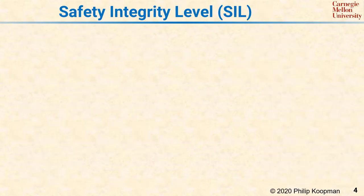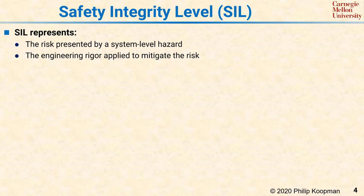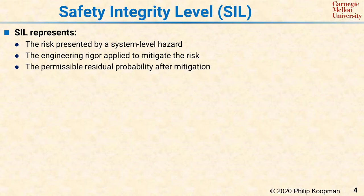The general strategy for building critical systems is to first define a safety integrity level, or SIL, that is required, and then use that SIL to guide the system design process. In practice, a SIL represents three related things: first, the risk presented by a system level hazard, with a high SIL being considered extremely hazardous and a low SIL considered minimally hazardous; second, the amount of engineering rigor and system cost applied to mitigate that risk; and third, an acceptable target for the residual probability of system failure after mitigation has been completed.